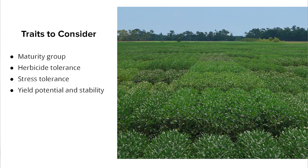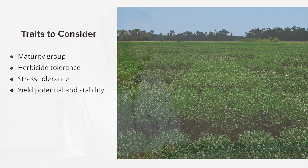Some of the traits we'll consider in this presentation include maturity group — you have to select the maturity group suitable for your growing area — also herbicide technology, so you can spray different herbicides to help control tough weeds, stress tolerance so your soybeans can handle different stresses on your farm, and of course yield potential and yield stability.